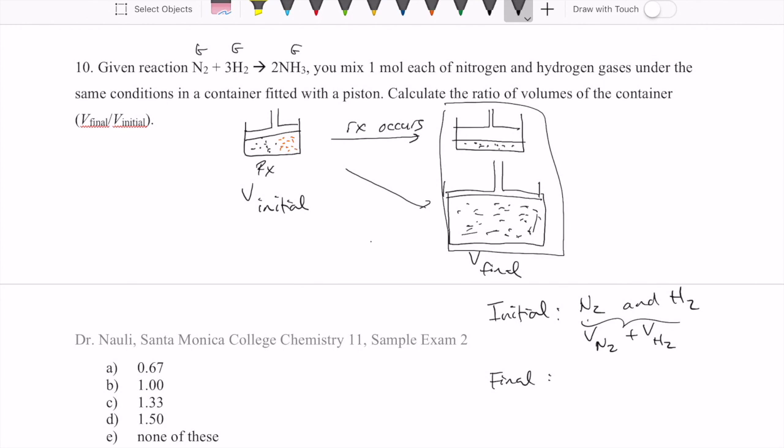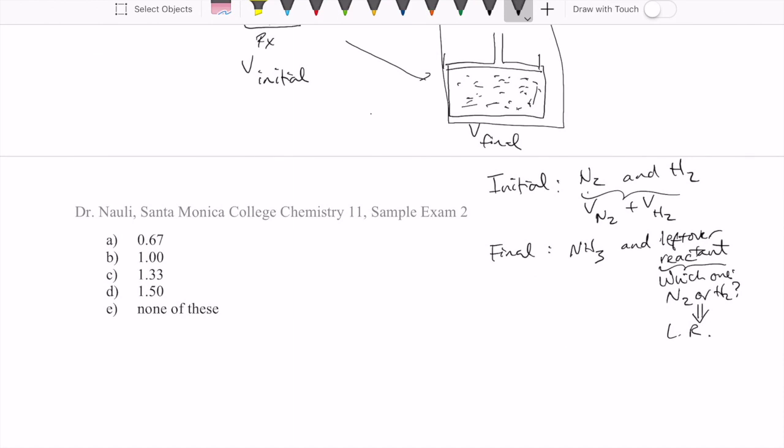In the final condition, we're going to definitely have the product, NH3, that's a gas. And we're going to have whatever is left over from the reactant, which requires us to do some kind of limiting reactant calculation. So once we figure that out, whichever one is left over, we're going to add the NH3 plus the leftover gas volume, and that's going to be our final.